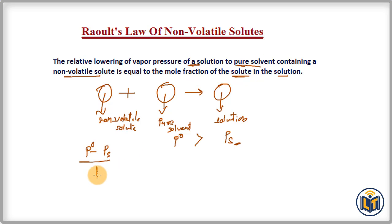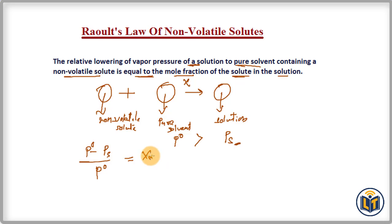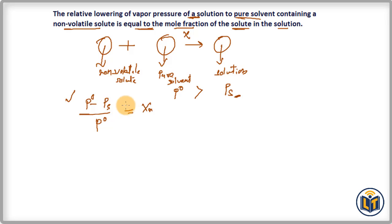The relative lowering of vapor pressure — that is (P naught minus PS) upon P naught — is equal to the mole fraction X of the solute in the solution. This is the relation we get for non-volatile solutes by Raoult's law. We can write this expression in a more simplified way.